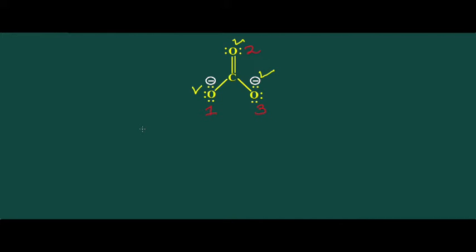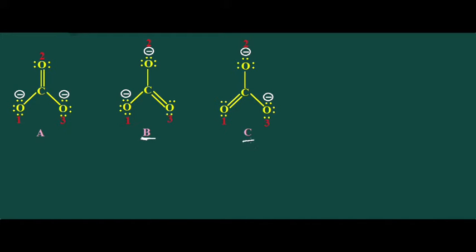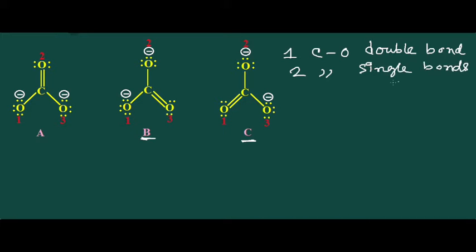In this case, we can have two more valid Lewis structures. Let me give this first Lewis structure the name A. The other two Lewis structures of carbonate ion are B and C. Each has one carbon-oxygen double bond, two carbon-oxygen single bonds, and 8 lone pairs of electrons. You can see that all the structures are similar.